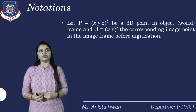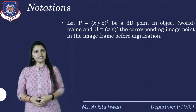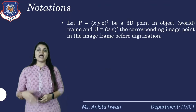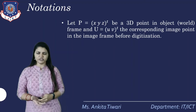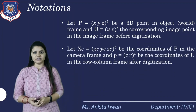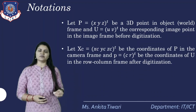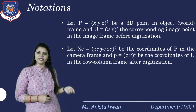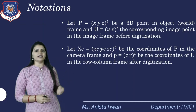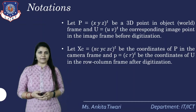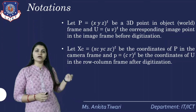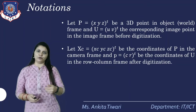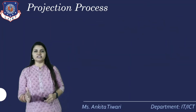The notation we use: P = (X, Y, Z)^T is the 3D point in the object frame (world frame), and U = (U, V)^T is the corresponding image point in the image frame before digitization. X = (Xc, Yc, Zc)^T gives the coordinates of P in the camera frame, and the projection point at C gives the coordinates of U in the row-column frame after digitization.